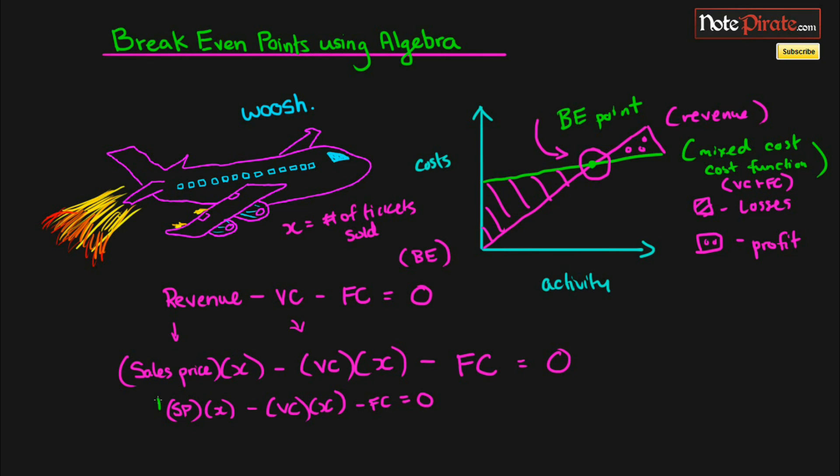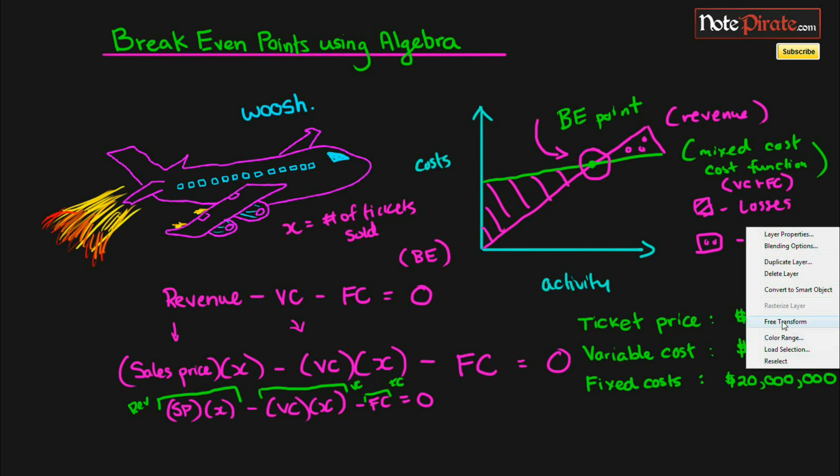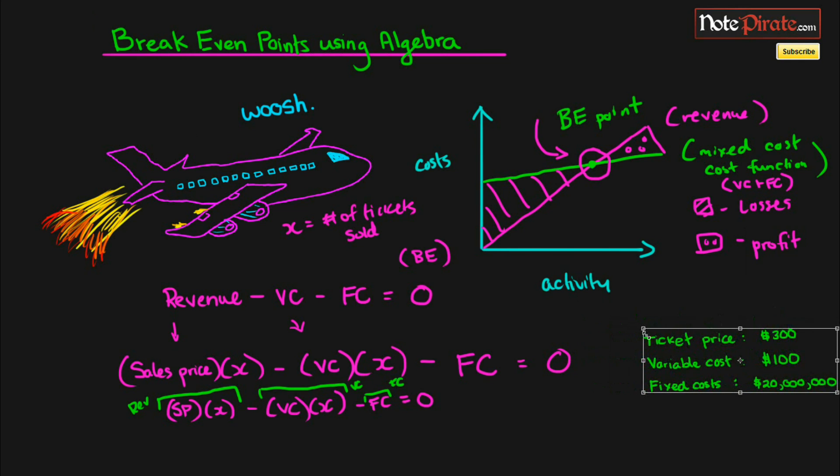This equation right here, this part represents the revenue, this of course represents the total variable cost, and this part is the fixed cost. Now that we've created this more expanded equation, if we have certain variables, which I do have, they're just kind of meshed in together right now with all this other content.